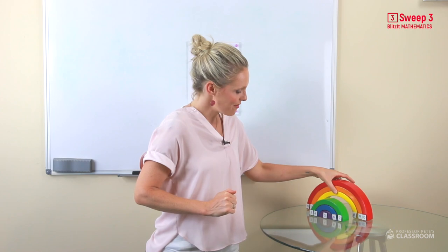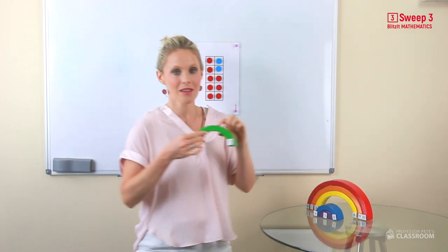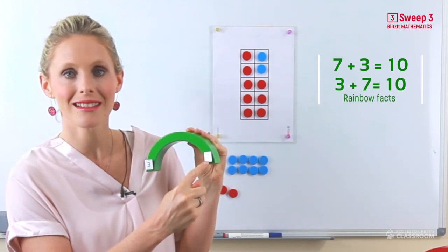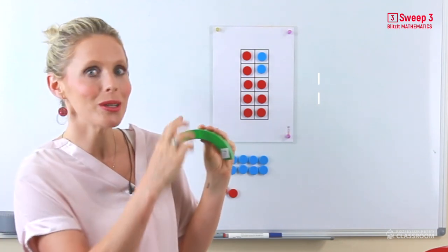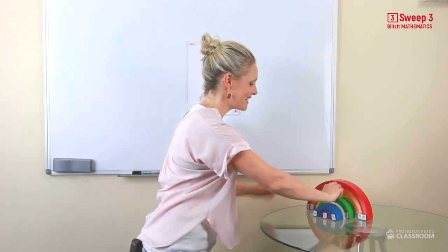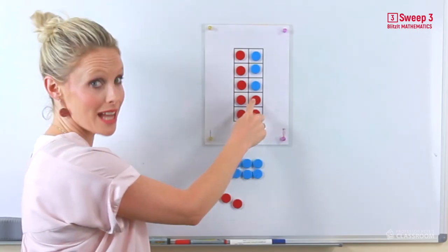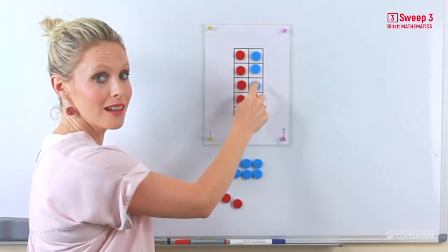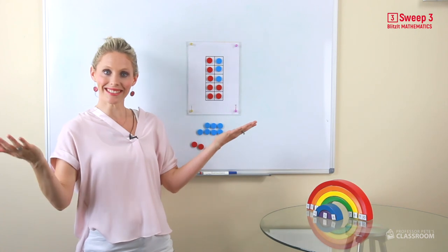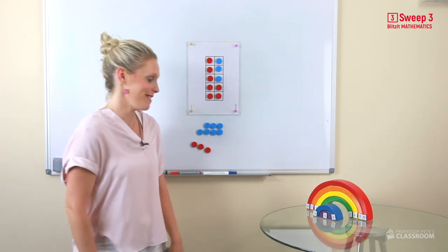Here we have 7 add 3 and 3 add 7 equals, you've got it, 10. 7 and 3, 3 and 7 equals 10. Rainbow number facts are so much fun.